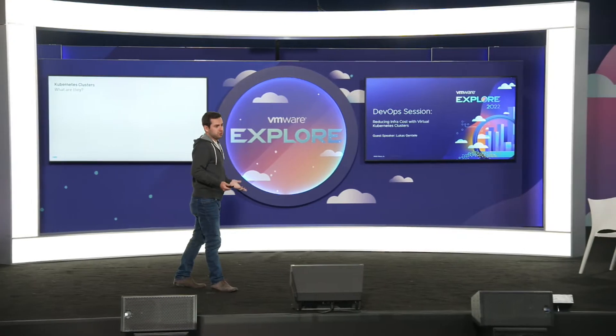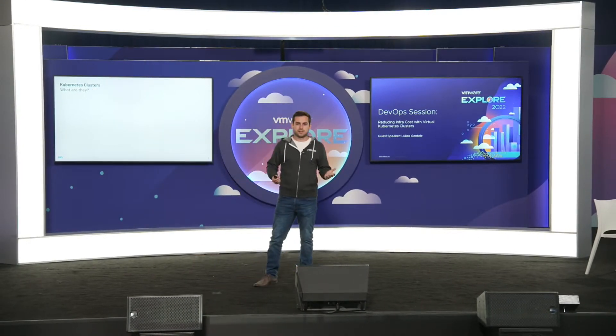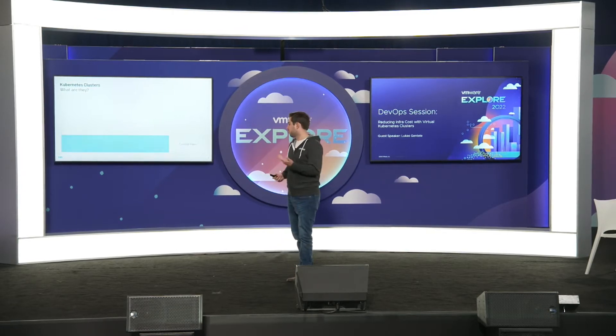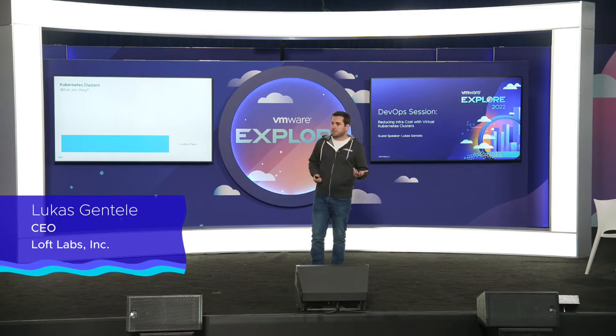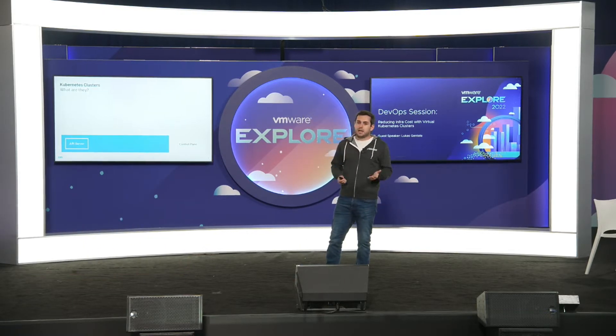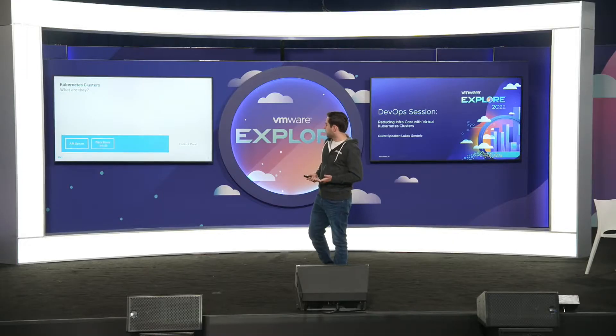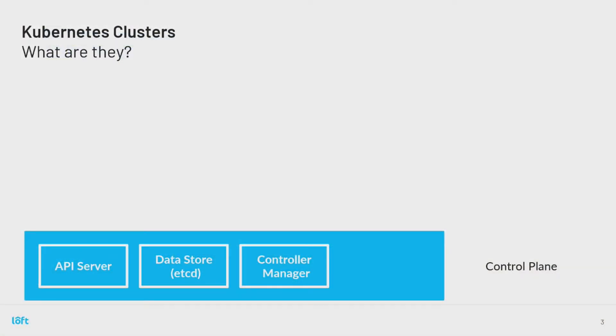To understand what virtual clusters are, you first need to understand what a Kubernetes cluster is. Essentially, a Kubernetes cluster has a control plane — that's the very fundamental part of it. This control plane typically has an API server that you talk to. Every kubectl command, everything you do with Kubernetes goes through this control plane to this API server. We also have typically a data store, which is etcd, that stores your information.